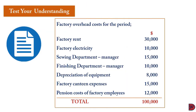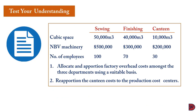Let's now test our understanding. Factory overhead costs for the period are stated below: factory rent, factory electricity, sewing department manager salary, finishing department manager salary, depreciation of equipment, factory canteen expenses, and pension cost of factory employees. The total factory overhead cost is $100,000.